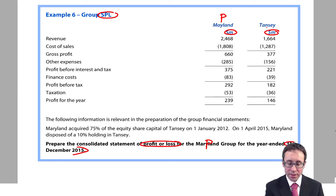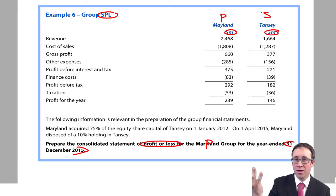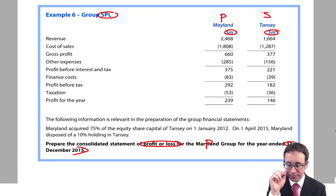You're then given some information. It says Maryland acquired 75% of the equity share capital of Tansy on the 1st of January 2012. So that is several years ago. We're year-end December, so 2014, 2013, 2012, three years ago.